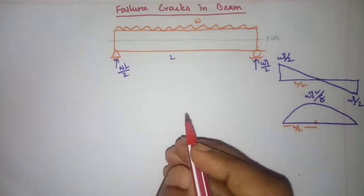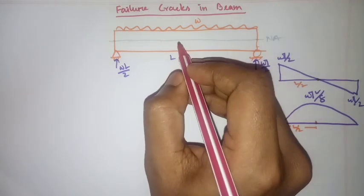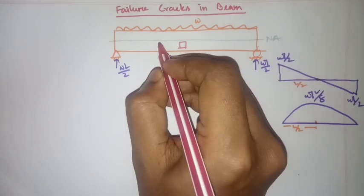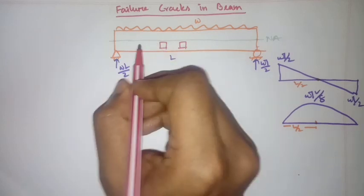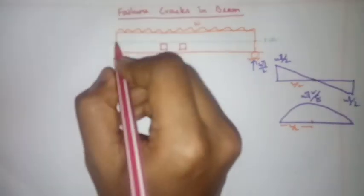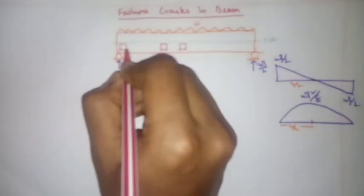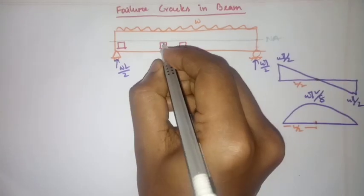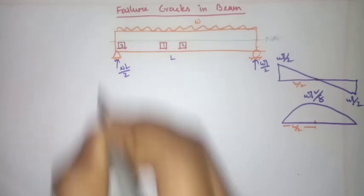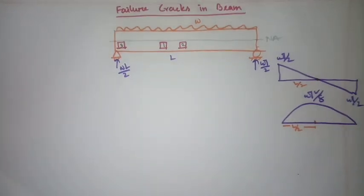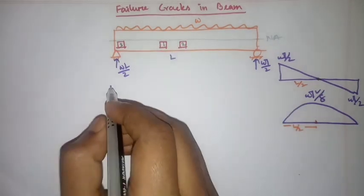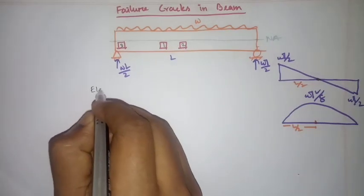I will take three sections: one at the mid-span of the beam, another between the mid-span and the support, and another one at the support — marked as elements one, two, and three. I will show you what cracks will develop at each of these elements.